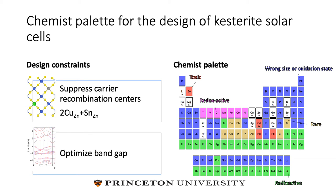The goal of this work is to identify promising ion substitution strategies for improving the efficiency of CZTS with the following constraints. First, that any strategy should suppress carrier recombination centers, where here we focus on the 2-copper-on-zinc, tin-on-zinc antisite cluster, which generates deep electron traps. And second, that it should optimize the bandgap in accordance with the Shockley-Queisser limit. In terms of new ions to introduce, the periodic table offers a rich palette of possibilities, where we've eliminated those that are radioactive, rare, redox-active, or possess the wrong size or oxidation state. This left us with a few sensible candidates: magnesium and cadmium on the zinc site, silicon and germanium on the tin site, and selenium on the sulfur site.